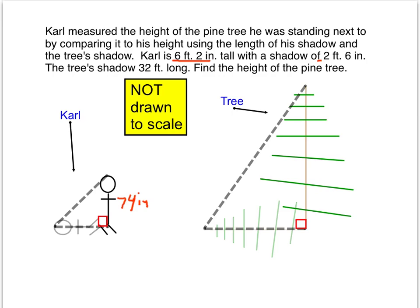His shadow is 2 feet 6 inches long, which is 2 times 12 plus 6, or 30 inches. The tree's shadow is 32 feet long, but the height of the tree is unknown. Let's call that x.